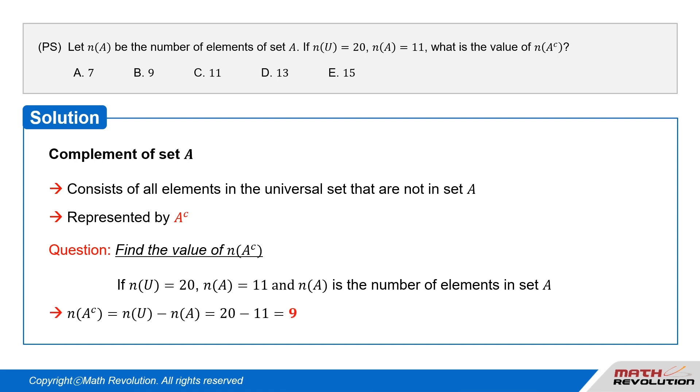Therefore, the number of elements in A's complement is the number of elements of set U minus the number of elements in set A, which is 20 minus 11, equals 9. Thus, B is the correct answer.